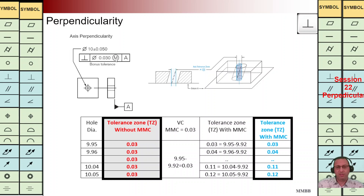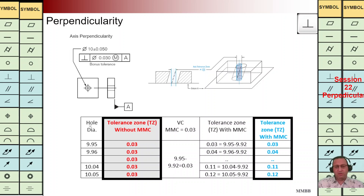We have the MMC condition — the axis of this hole should be perpendicular to datum A. In this manner we are going to have a cylinder with a diameter of 0.03, and the axis of this hole should be within that value. This is how we control the orientation of this hole.